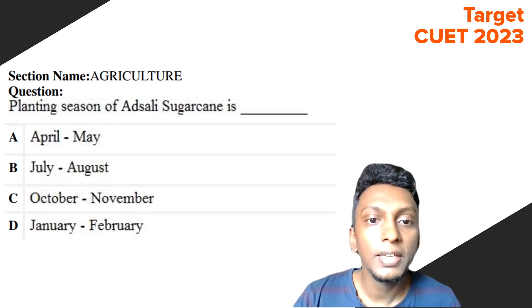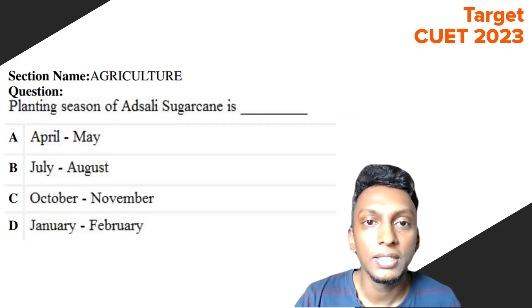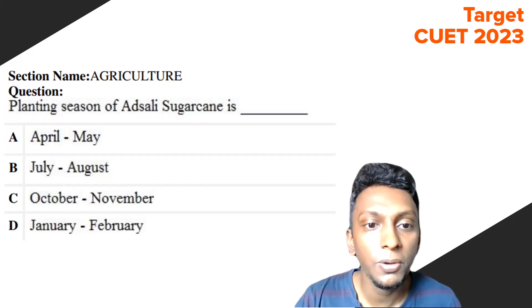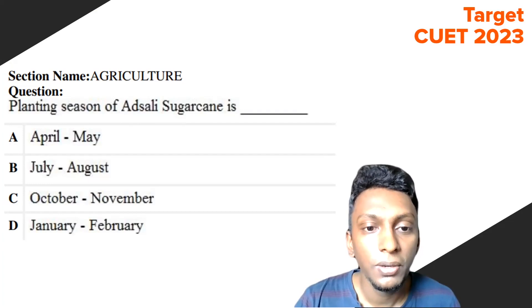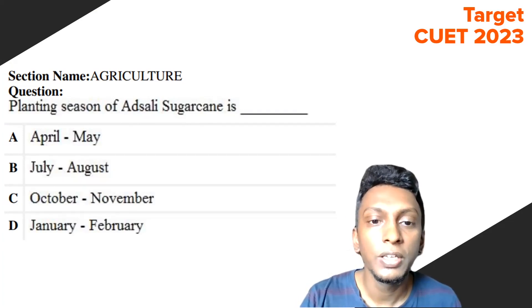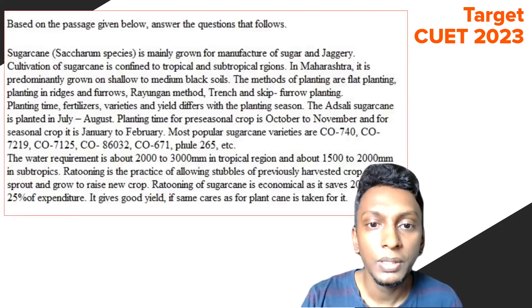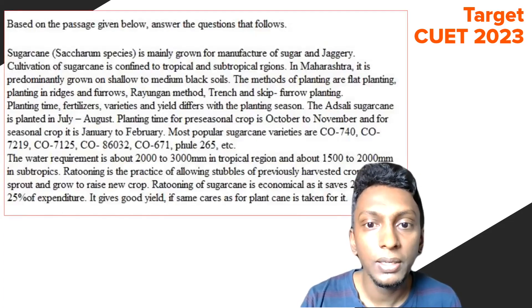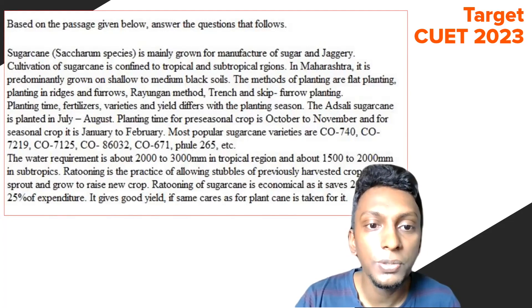Question 2: The planting season of Hatsali sugarcane is? The options are: April to May, July to August, October to November, January to February. The passage states that Hatsali sugarcane is planted from July to August, so Option B is the correct answer.